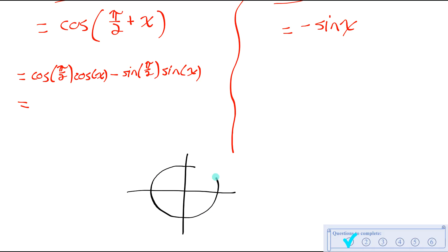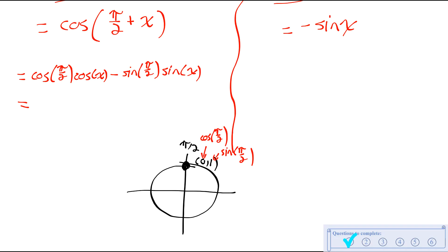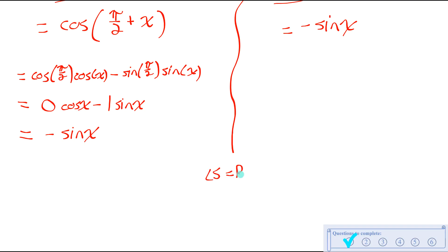If you know your unit circle, these trig values are easy to evaluate. If I rotate pi over 2, the terminal arm intersects the unit circle at the point (0, 1). The y-coordinate tells me the value of the sine ratio, so sine of pi over 2 is 1. And the x-coordinate tells me the cosine ratio, so cos of pi over 2 is 0. You could type these into your calculator in radian mode, but if you know your unit circle we don't need to. Cos of pi over 2 is 0, and sine of pi over 2 is 1. So 0 times cos x is 0, and all I'm left with is negative 1 times sine x, which is negative sine x — exactly what we have on the right. Left side equals right side.